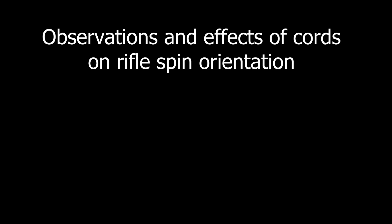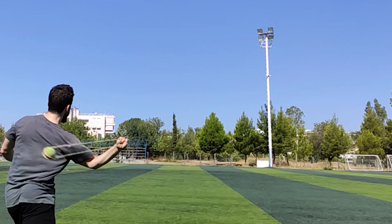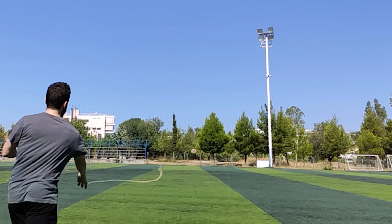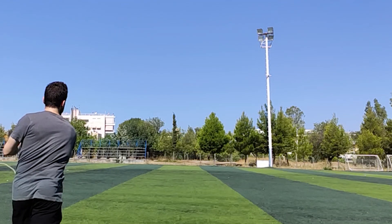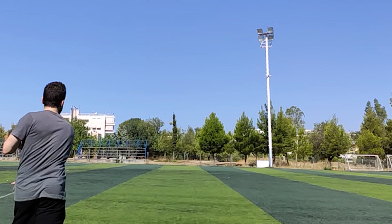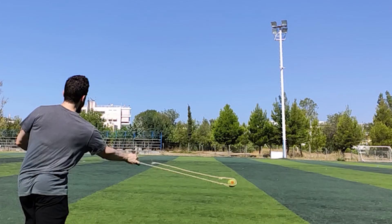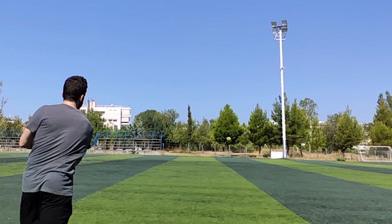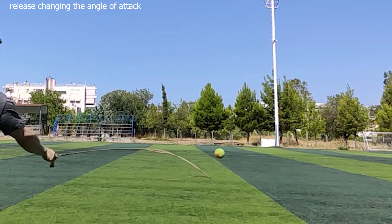Observations and effects of chords on spin orientation. I painted dots on tennis balls to observe their orientation and spin. Lattice slings lose contact faster, and the turning effect of the pouch doesn't change the angle of attack of the projectile from the moment of chord release to the moment of projectile release. Heavy slings do change the angle of attack between release and contact loss.